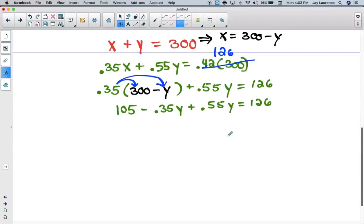I'm going to combine like terms and get 105. Be careful on combining like terms. Remember that 0.35 is negative. So I'm going to get plus 0.20Y, or 0.2Y. I'm going to subtract 105 from both sides.